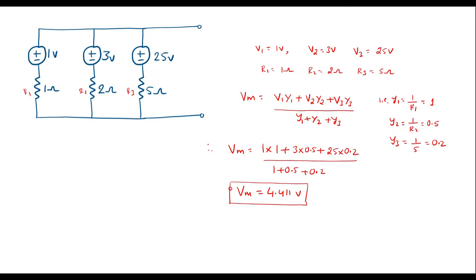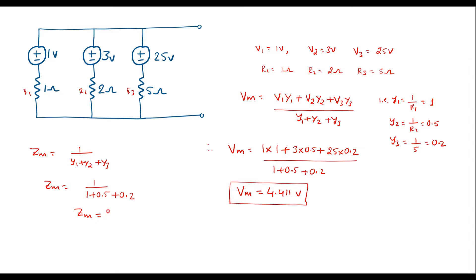So this is the Millman's voltage Vm = 4.411 V. Now let me calculate the Millman's impedance Zm, which is given by 1 / (Y1 + Y2 + Y3). Therefore Zm = 1 / (1 + 0.5 + 0.2), which gives Zm = 0.588 ohm.